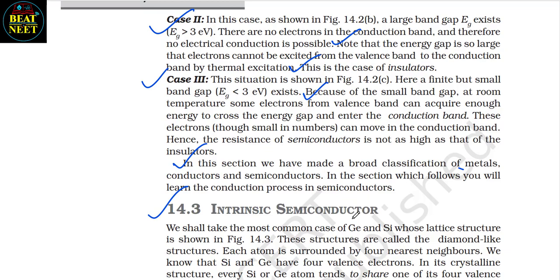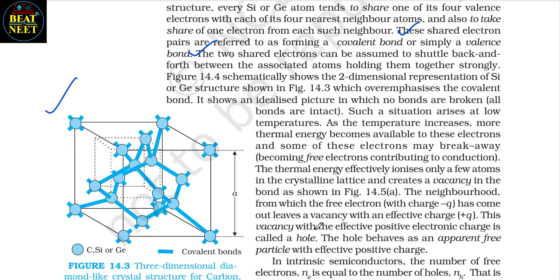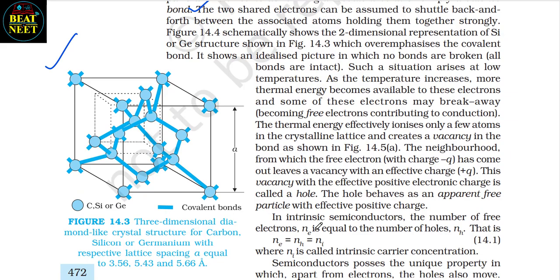14.3 Intrinsic Semiconductor. We shall take the most common case of germanium and silicon whose lattice structure is shown in figure 14.3b. These structures are called diamond-like structures; each atom is surrounded by four nearest neighbors. Silicon and germanium have four valence electrons. In its crystalline structure, every silicon or germanium atom tends to share one of its four valence electrons with each of its four nearest neighbor atoms, and also to take a share of one electron from each such neighbor. These shared electron pairs are referred to as forming a covalent bond or simply a valence bond.